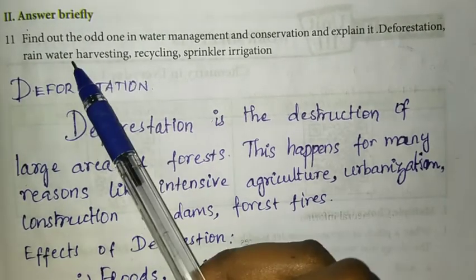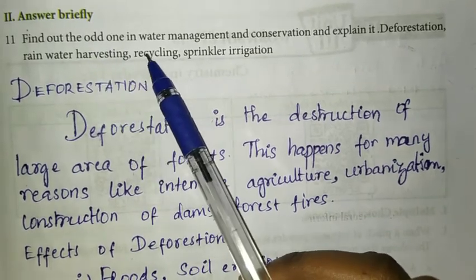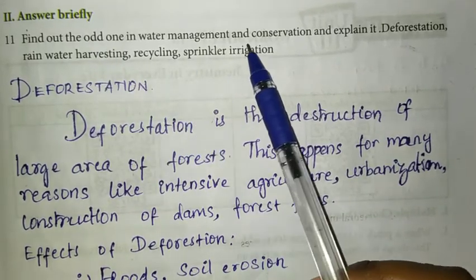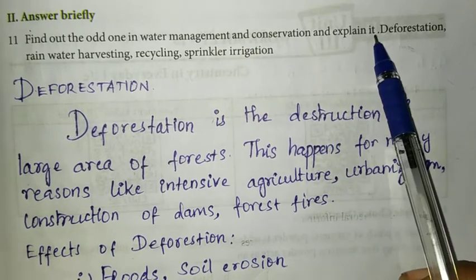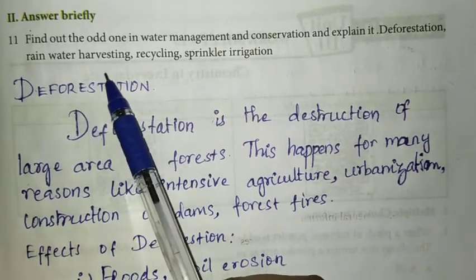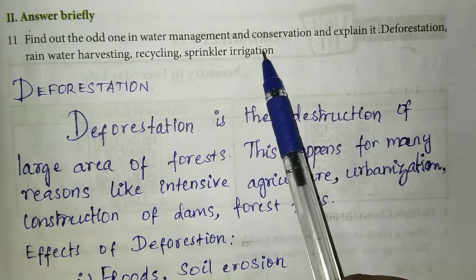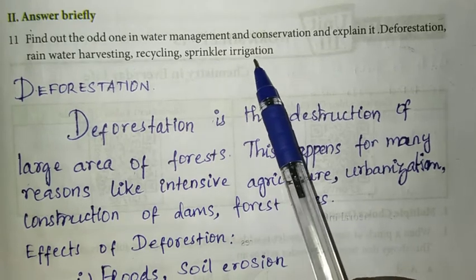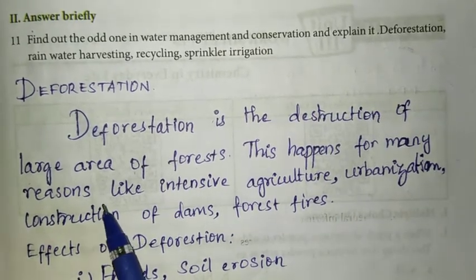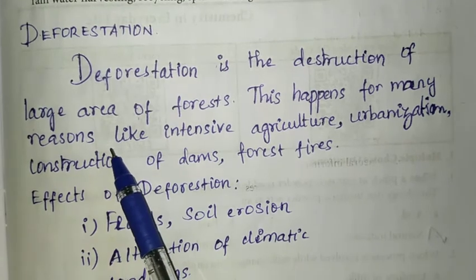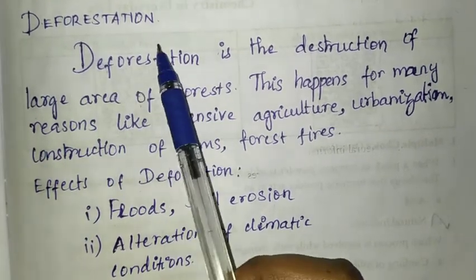Next, answer briefly. 11th question: find out the odd one in water management conservation and explain it. Options: deforestation, rainwater harvesting, recycling, sprinkler irrigation. The odd one is deforestation. Write: deforestation.